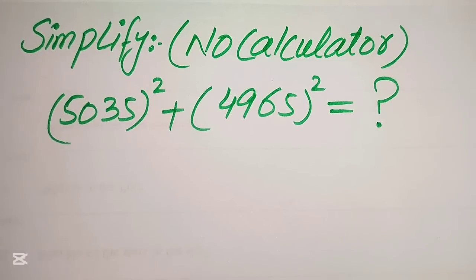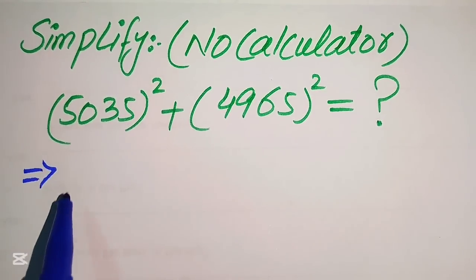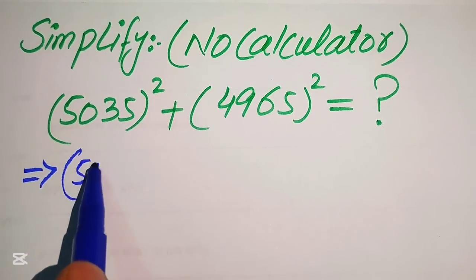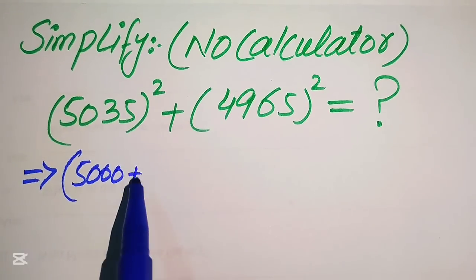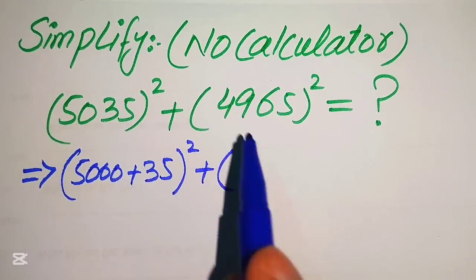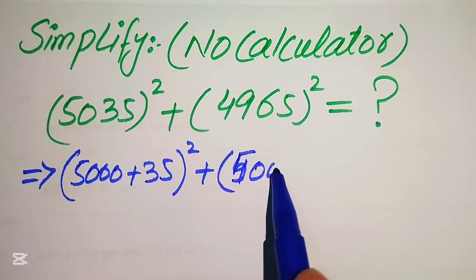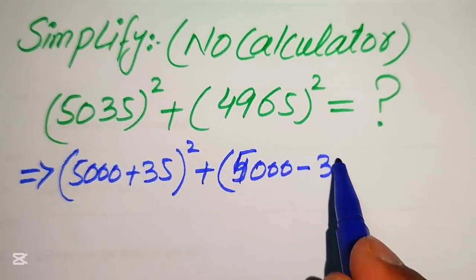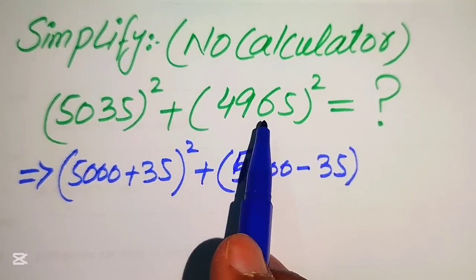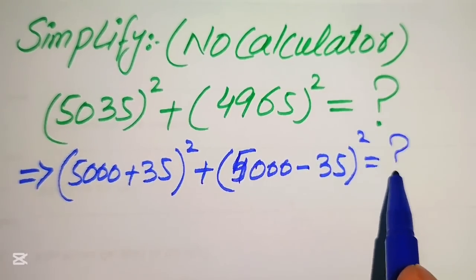The very first step is to rewrite this algebraic expression. We write 5035 as 5000 plus 35, whole square, plus 5000 minus 35, whole square. Notice that 5000 minus 35 equals 4965, which confirms the second term.